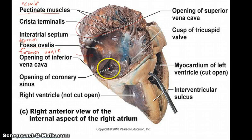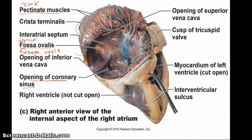You'll also find in the right atrium the opening of the coronary sinus, located just inferior to the opening of the inferior vena cava.